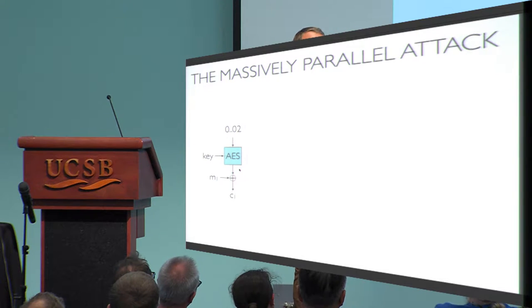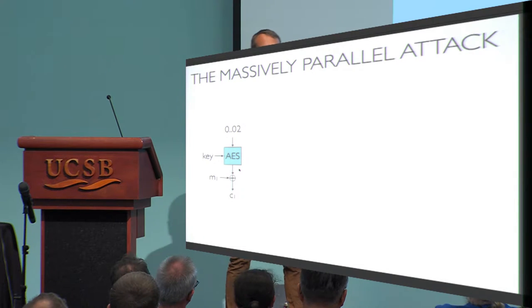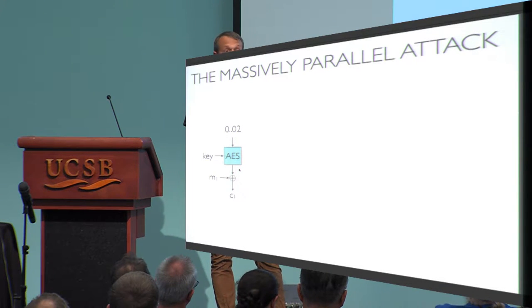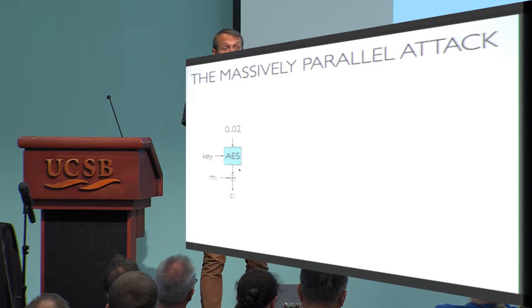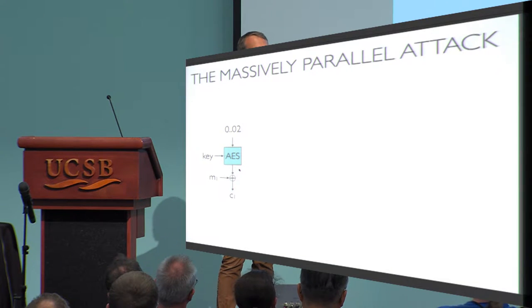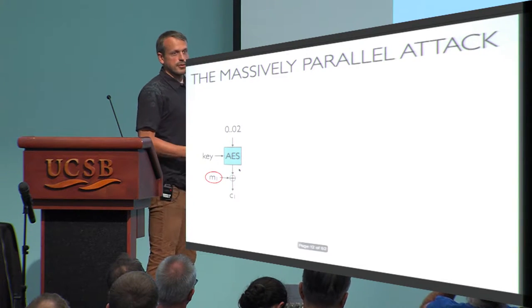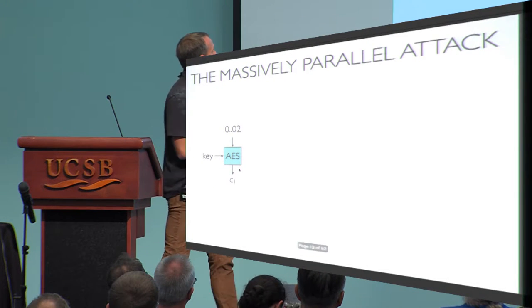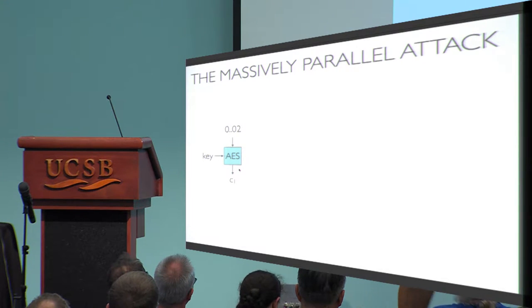For most protocols, for example if you encrypt an HTTP connection, the first message the client sends to the server will be an HTTP GET followed by a URL and protocol version. So we know what this plaintext is going to be. The same holds for almost any other specified protocol — they start with some fixed header information. By just looking at the traffic, we can predict the first blocks of the plaintext.